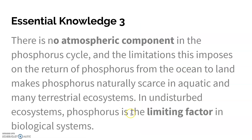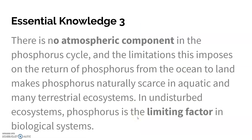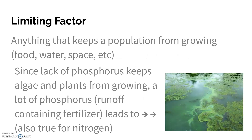Because it's such a slow cycle, phosphorus is a limiting factor in biological systems. What that means is it determines the rate of growth in that biological system. If you have a lot of phosphorus, you're going to get a lot of growth.